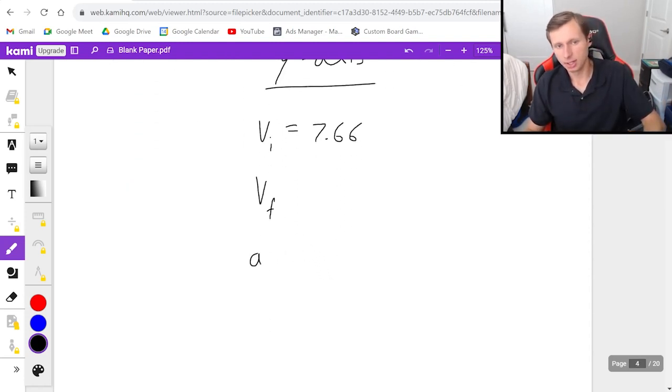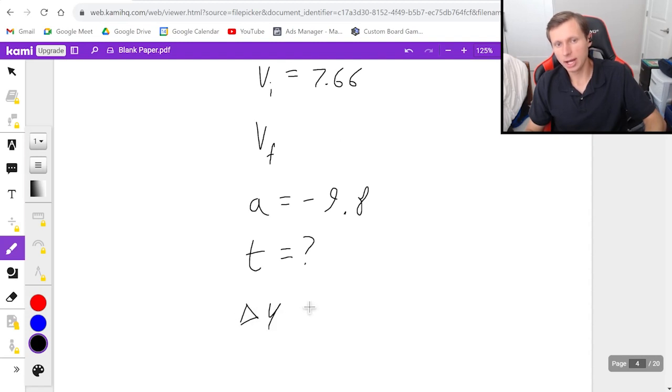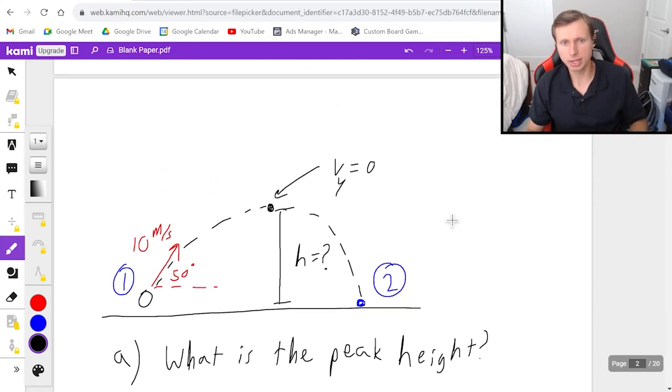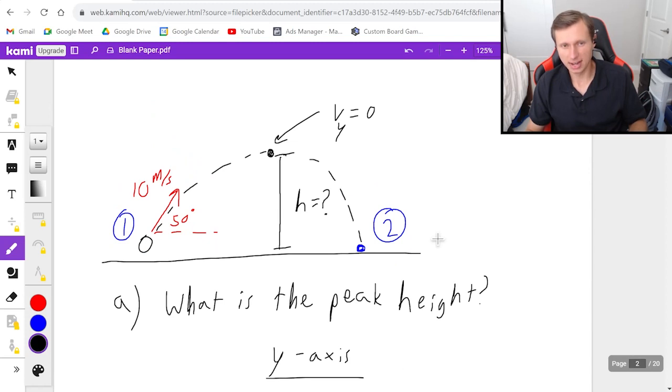So v final is unknown. Acceleration did not change, still negative 9.8. Time is what I'm solving for, so I probably don't know that. And delta y, well, let's put it this way. If we don't know delta y, that's only two of the five, we can't solve for time. So I'm really hoping we know delta y. And I do. I don't think you do. Why don't you look at the picture and try and think about it. What is delta y for this problem? Did you figure it out?